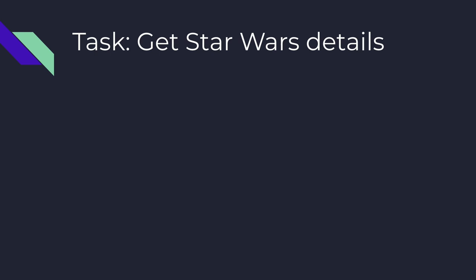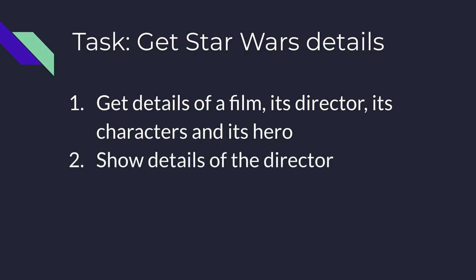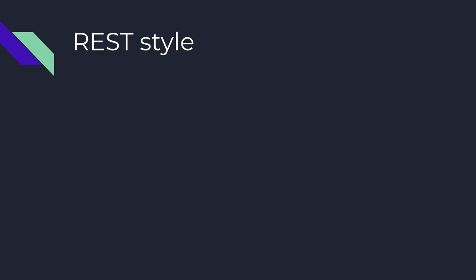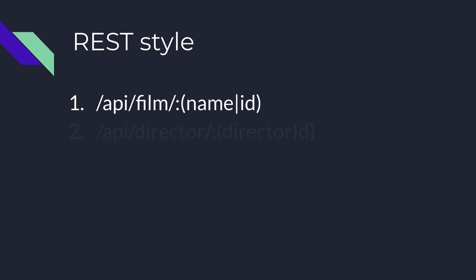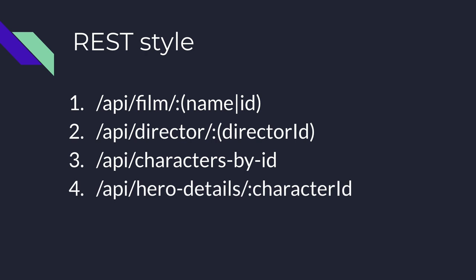Let's do a task: we have to get details of Star Wars films, the details of its director, and the extended details of the hero. How do you do it using REST? In REST, there are a bunch of APIs — there may be one for getting the film details, one for the director details, one for getting the characters by ID, and one for the extended details of the hero.